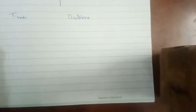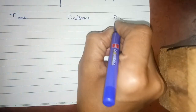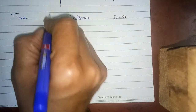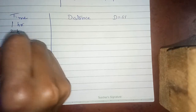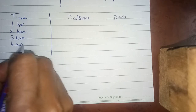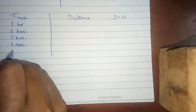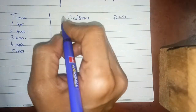Example number 8 has one column for time and one column for distance. Now what is the formula for distance? Distance is equal to speed multiplied by time. If time is 1 hour, what will the distance be? If 2 hours, what will the distance be? If 3, 4, or 5 hours, what will the distance be? We will solve for 4-5 terms accordingly.